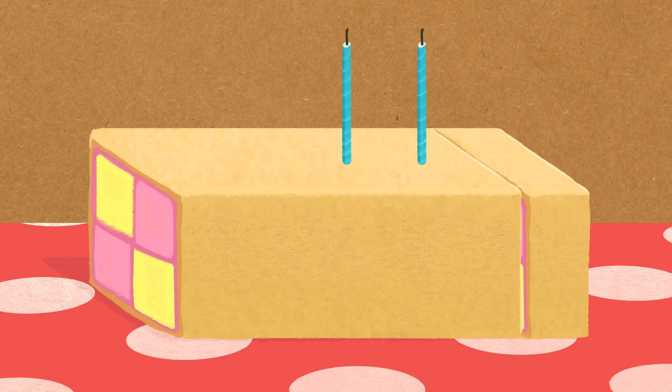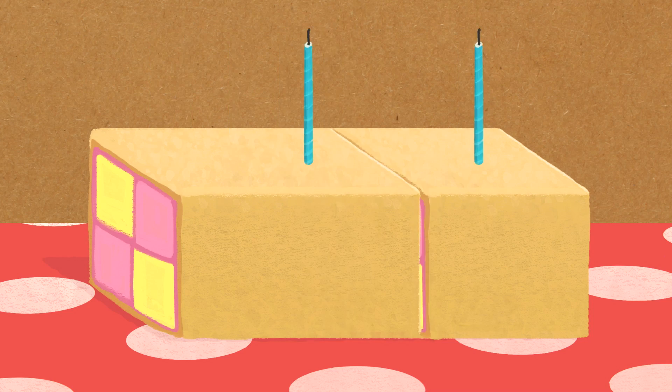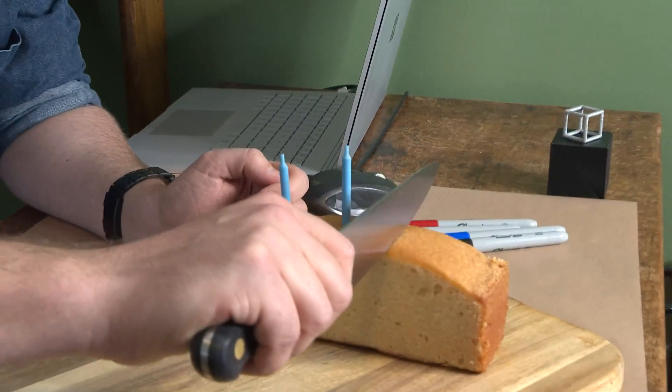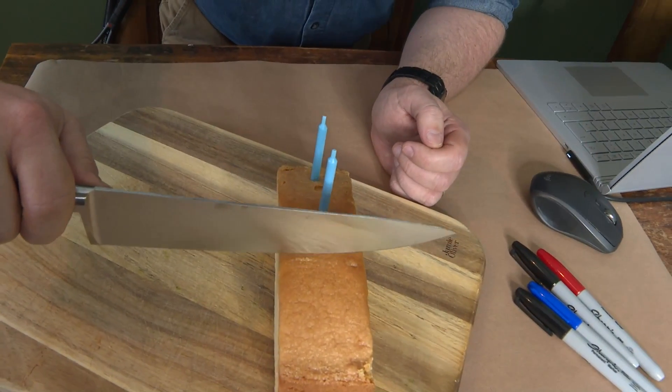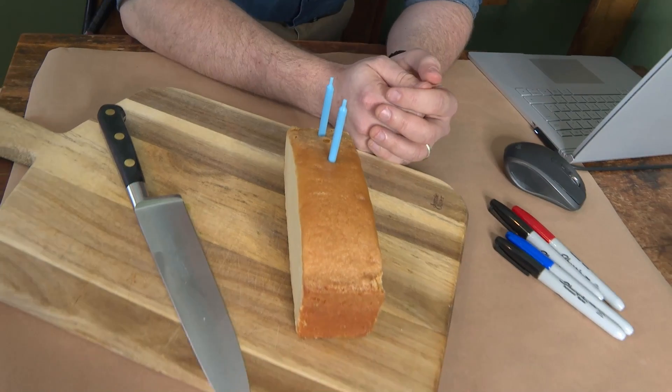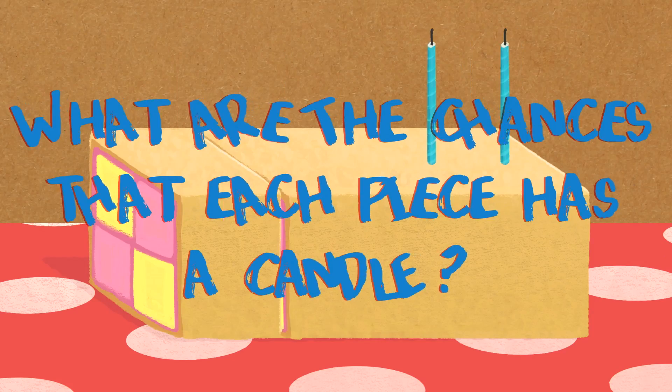The puzzle now comes when you pick up a knife and you say the cut of this cake happens also randomly. If I cut it here, then I'm not too worried about the unequal pieces, we'll just deal with the aftermath of that another day. The point I want to talk about this time is that there is not a candle on each piece. So the question becomes now a probability question. If the candles go on randomly and the cut is done randomly, what are the chances that each piece has a candle?